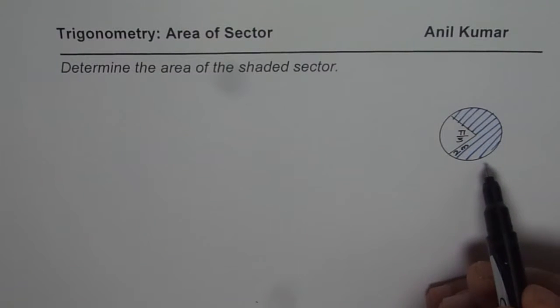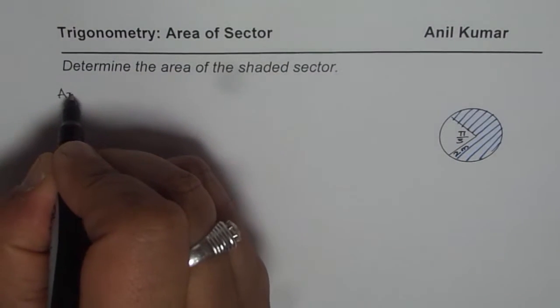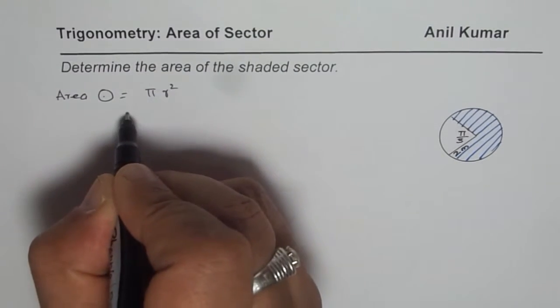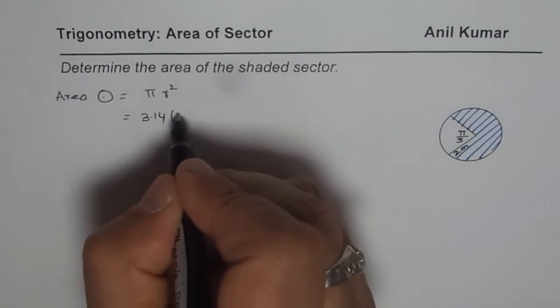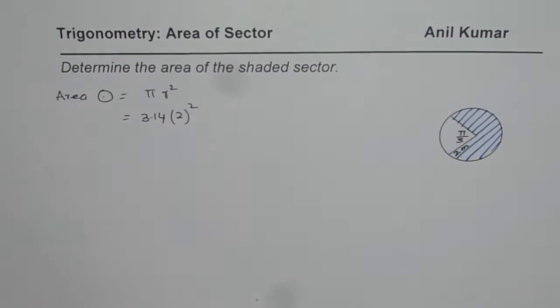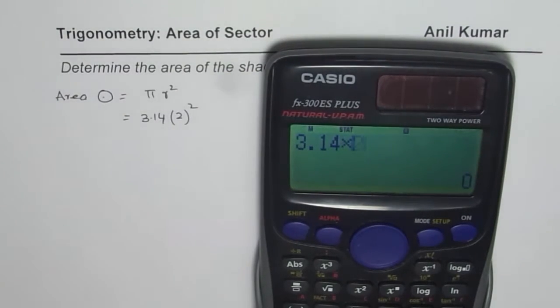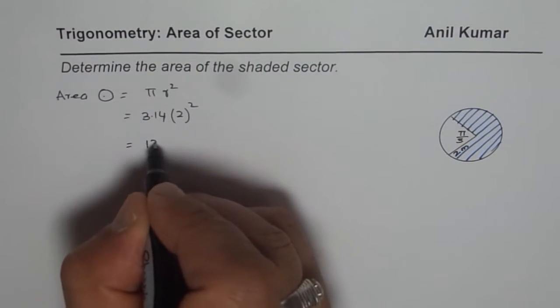So in this particular case what should we do? The first step is find area of the circle. Area of the circle is pi r squared. We can write pi as 3.14. Radius is 2 meters so 2 squared. Let's calculate this value which is 3.14 times 2 squared.